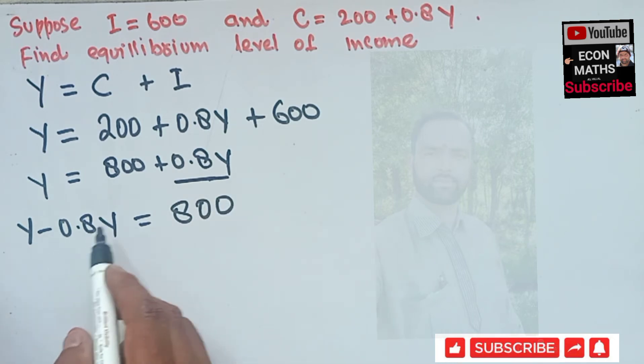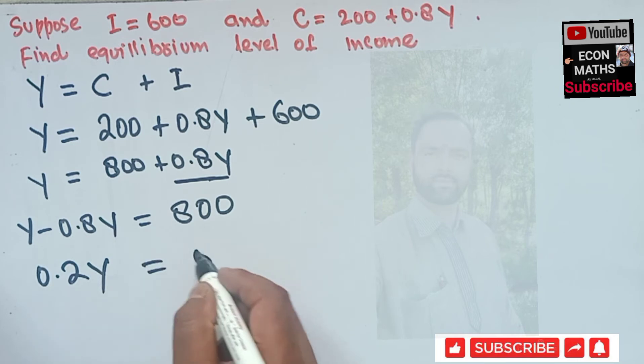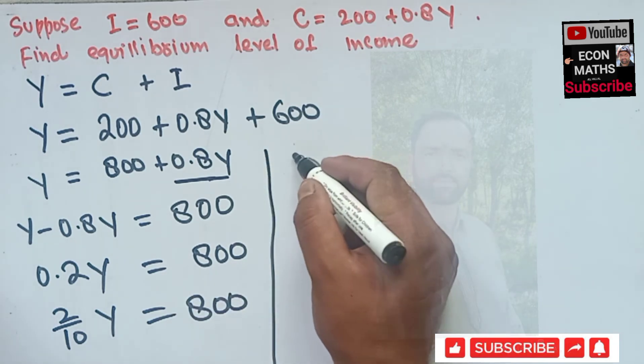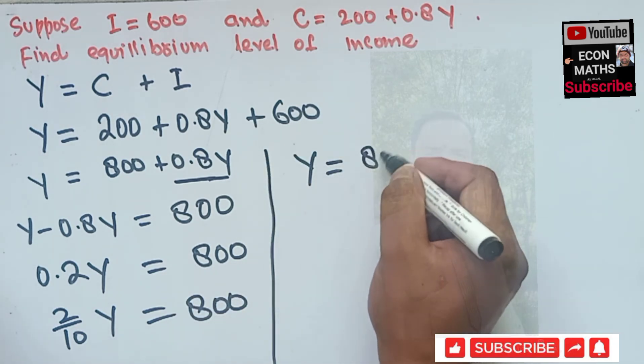When we subtract 0.8Y from Y, we will get 0.2Y should be equal to 800, or 0.2Y can be also written as 2 by 10 Y is equal to 800.